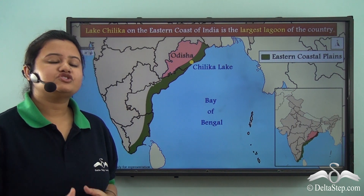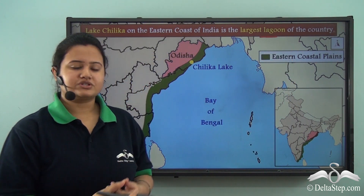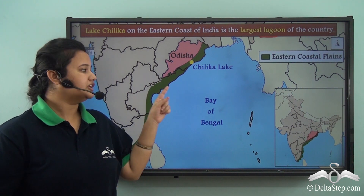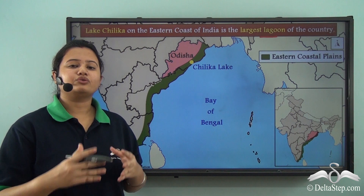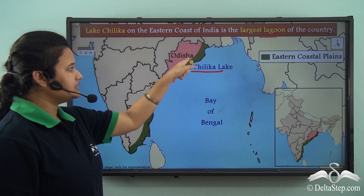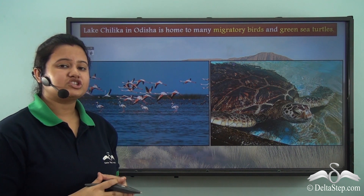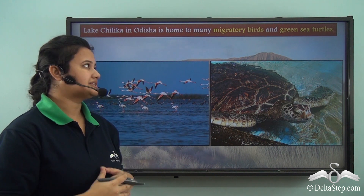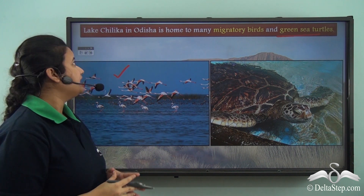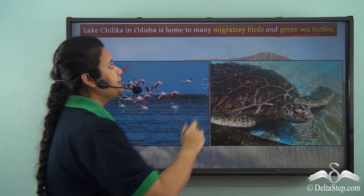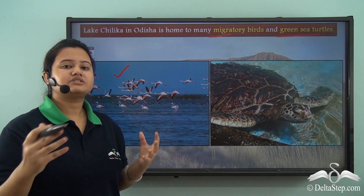Another interesting feature of the eastern coastal plain is the presence of lagoons. Lagoons are saltwater lakes which were once a part of a huge sea but somehow got separated from the main body of water. The largest lagoon of India is Chilka Lake, which is a part of the eastern coastal plains and belongs to the state of Odisha. Chilka Lake is rich in biodiversity and contains some endangered species like green sea turtles. Also, a host of migratory birds and some fishes can be found here. Thus, Chilka Lake in Odisha is a home to many migratory birds and sea green turtles, making it also an important tourist attraction of Odisha.